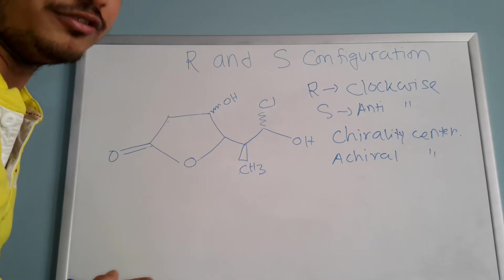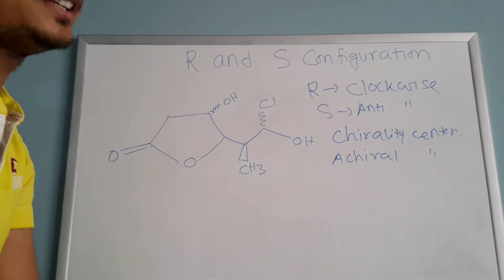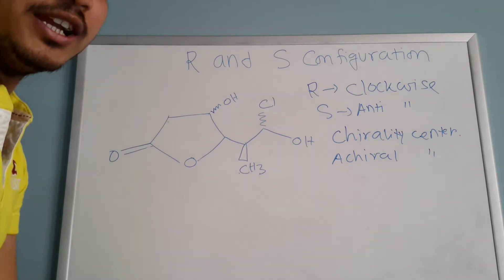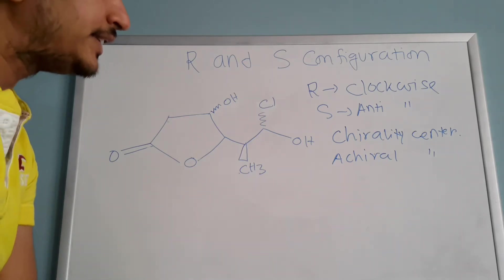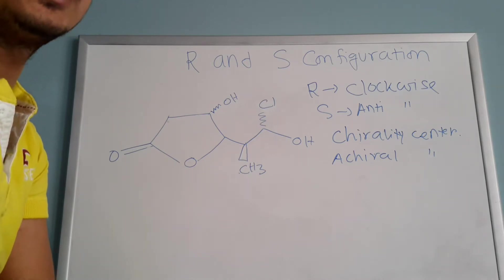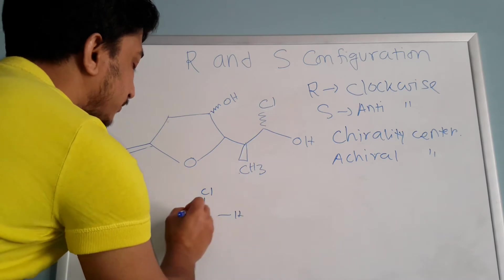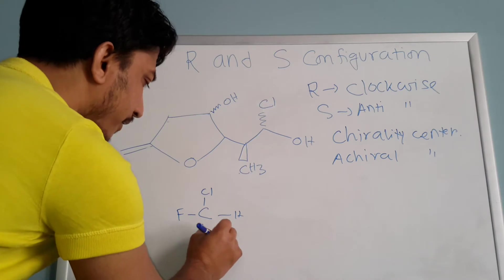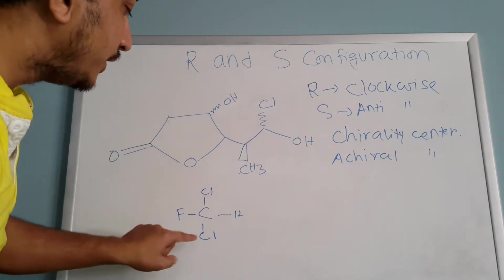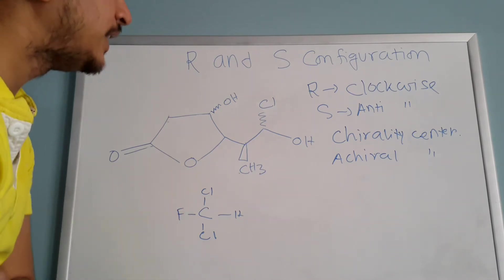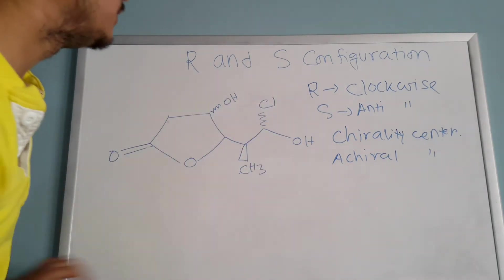A chirality center — you know that carbon needs four bonds to fill up. Those four bonds have to be four different bonds. If it is the same kind of bond, then you cannot say this is a chirality center. For example, this is not a chirality center because the two chlorine bonds are the same kind of bond, so there is no chirality center.